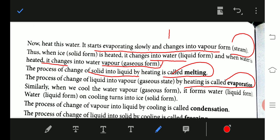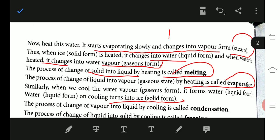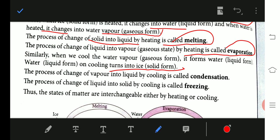Similarly, when we cool the water vapor, it forms water and water on cooling turns into ice, that is solid form. The process of change of water vapor into liquid by cooling is called condensation and the process of change of liquid into solid by cooling is called freezing.